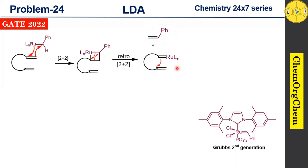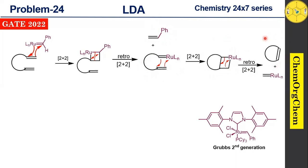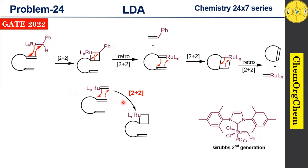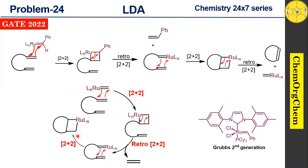This new active catalyst undergoes [2+2] cycloaddition with the second alkene of the substrate to produce a four-membered metallacyclobutane intermediate, followed by retro [2+2] cycloaddition to produce the cyclized product and regenerate the active catalyst. A key point: the retro [2+2] cycloaddition also produces ethylene as a byproduct. When our substrate is treated with Grubbs 2 catalyst, it readily produces the cyclized ring-closed product along with ethylene as a byproduct.